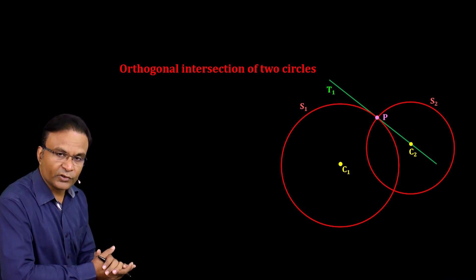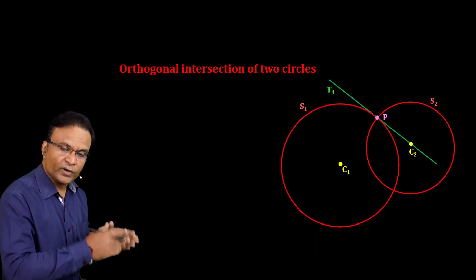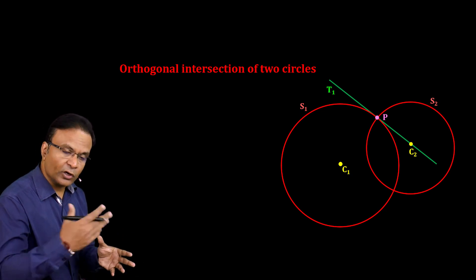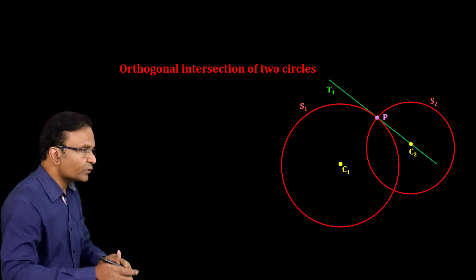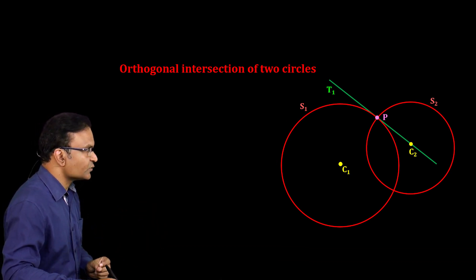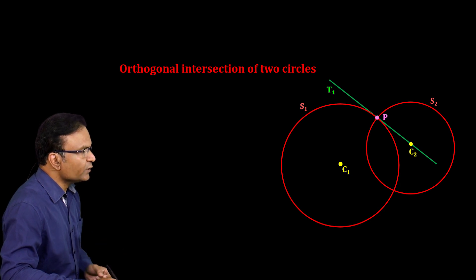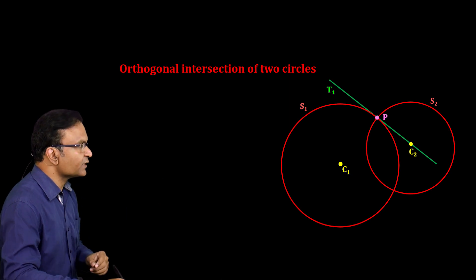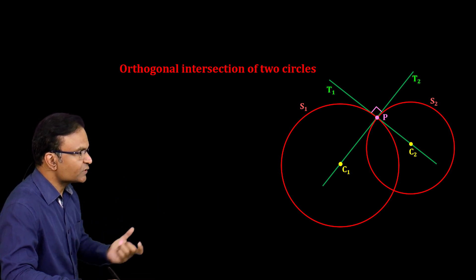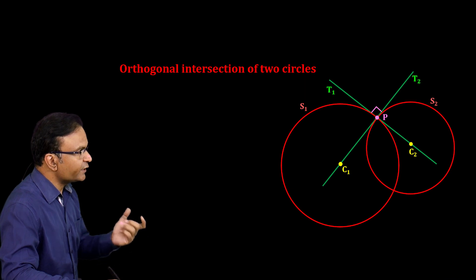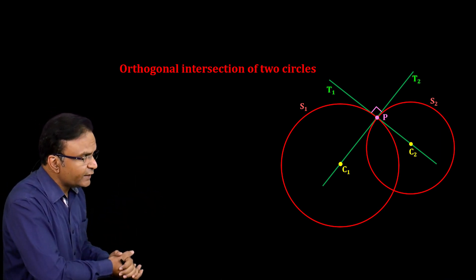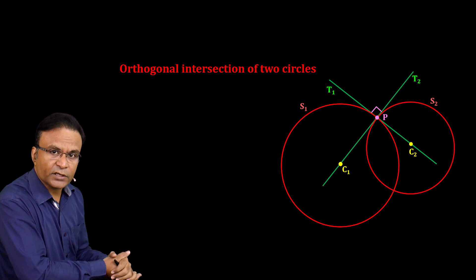When two curves intersect orthogonally, the tangent to one curve is the normal to the other curve. Since the normal to a circle always passes through its center, tangent T1 of circle S1 passes through the center of circle S2. Also, if we draw tangent T2 to circle S2 at point P, this will pass through the center of circle S1, because T2 will be normal to circle S1. This is the geometry related to orthogonal intersection of two circles.